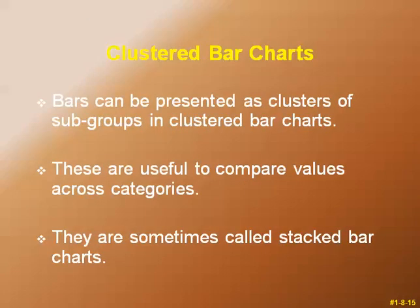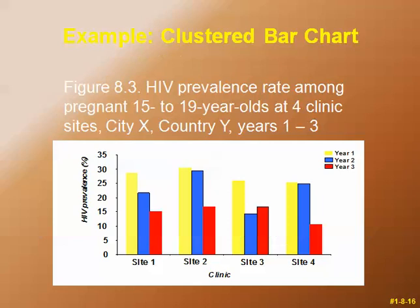Clustered bar charts: bars can be presented as clusters of subgroups. These are useful to compare values across categories and are sometimes called stacked bar charts. An example shows HIV prevalence percentage from 0 to 35 percent on the y-axis, with clustered bars of different colors and heights at sites 1, 2, and 3 on the x-axis. This represents HIV prevalence among pregnant 15–19 year olds at four clinic sites in city X and country Y. Yellow represents year one, blue represents year two, and red represents year three.